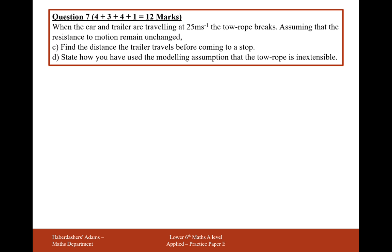Looking ahead to part C. So when the car and the trailer reach a speed of 25 meters per second, the tow bar breaks. Assuming that the resistance to motion remains unchanged, find the distance the trailer travels before coming to a stop. So I think what we need here is a bit of SUVAT.